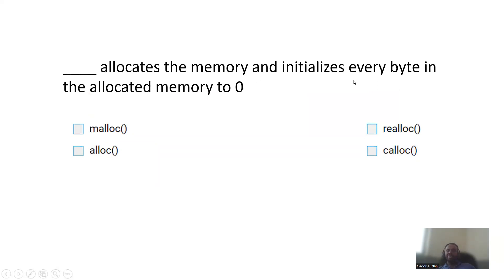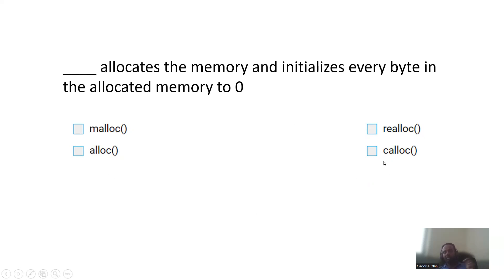calloc allocates memory and initializes every byte in the allocated memory to zero. When dynamic memory allocation is needed, built-in functions are used. To dynamically allocate memory, you can use malloc, calloc, or realloc. Try to figure out the difference between those four functions: malloc, calloc, realloc, and free.